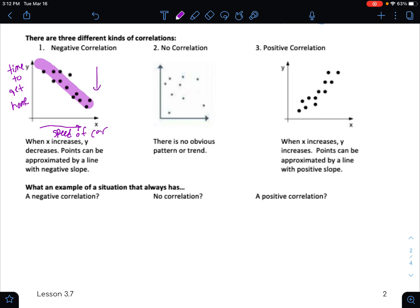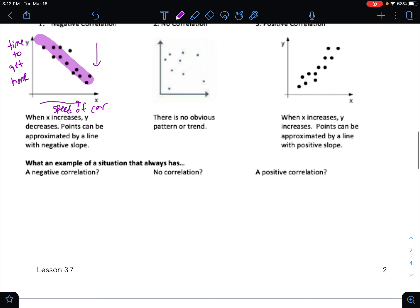The speed of the car, as the car speeds up, it's going to take less time to get home. So that would be an example of a negative correlation. The faster you drive your car, the less time it takes to get home.